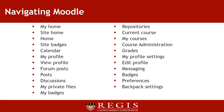Current Course: Select this link to expand the options under it, which are generally links to different areas within the course you are currently in. My Courses: This link brings you to My Home. Course Administration: Select this link to expand the options under it. Grades: This link will bring you to your current grades in the course you are currently in.